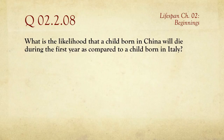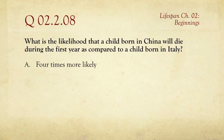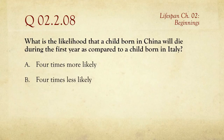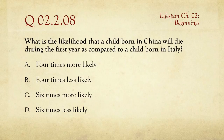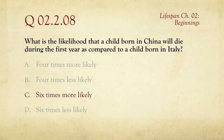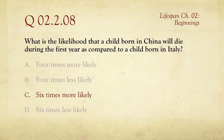Number eight: what is the likelihood that a child born in China will die during the first year compared to a child born in Italy? The choices are four times more likely, four times less likely, six times more likely, or six times less likely. The answer is six times more likely — a child born in China has a mortality rate six times higher than in Italy, though with changes going on in China that statistic is probably outdated and changing dramatically.